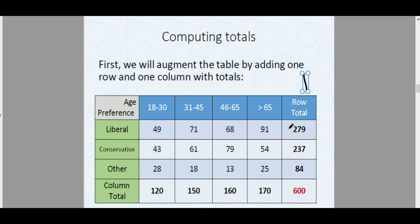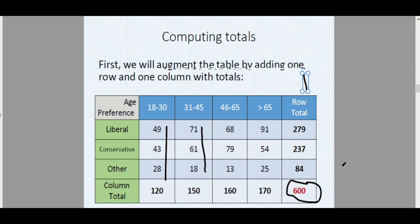The row total for Liberal is 279, computed as 49 + 71 + 68 + 91 = 279. For Conservative it is 43 + 79 + 54 + 61 = 237, and Others is 28 + 18 + 13 + 25 = 84. For the column totals, we add from top to bottom: 49 + 43 + 28 = 120, 71 + 61 + 18 = 150, and so on. The total respondents is 600, verified both by row totals (279 + 237 + 84 = 600) and column totals (120 + 150 + 160 + 170 = 600).